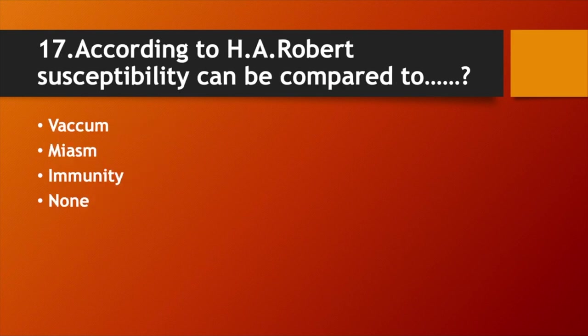According to H.A. Roberts, susceptibility can be compared to: Option A. Welcome. Option B. Miasm. Option C. Immunity. Option D. None of these. Answer: Option A. Welcome.